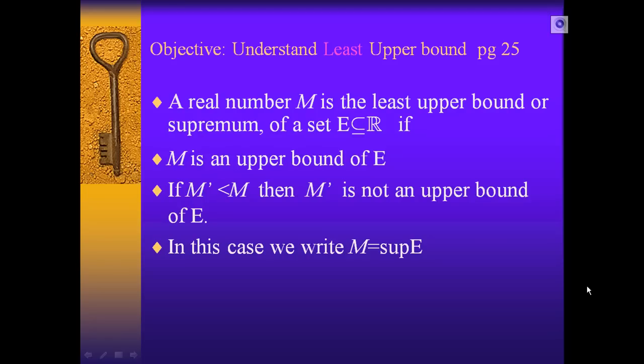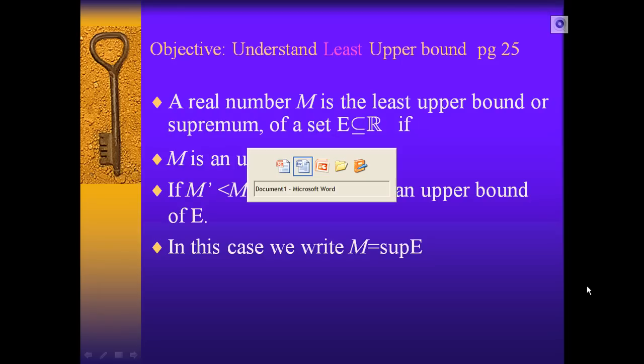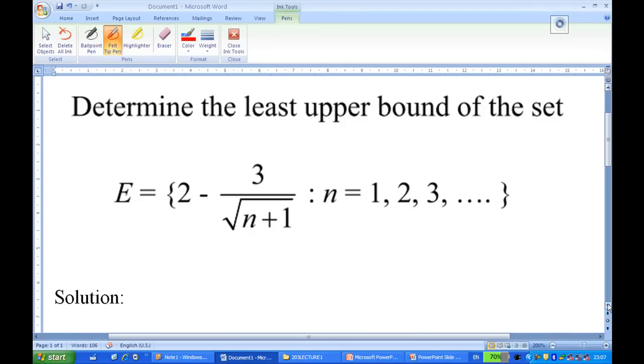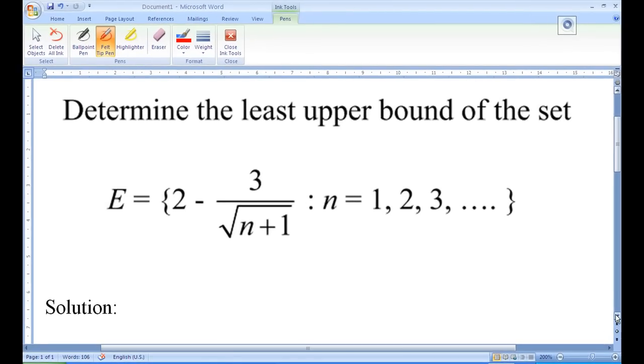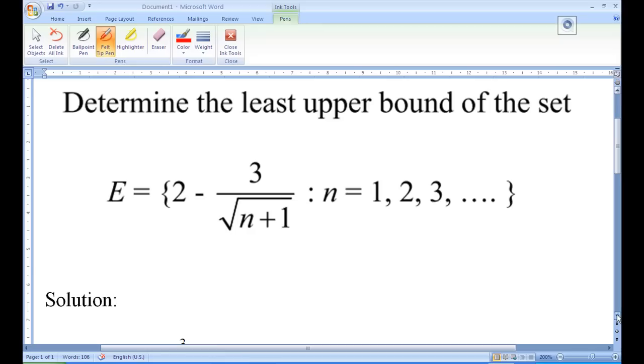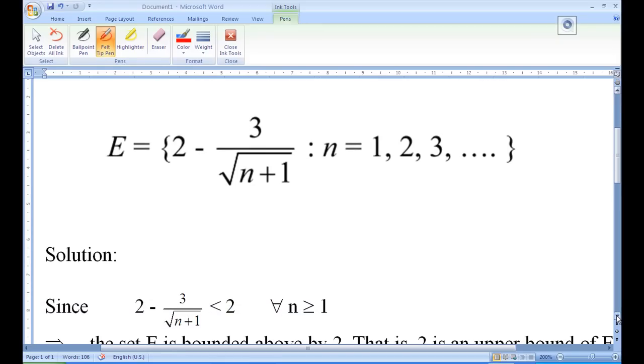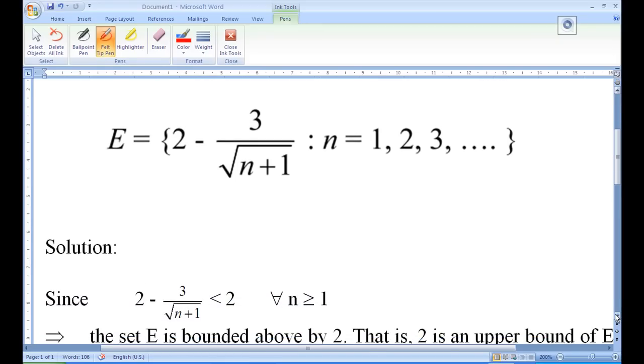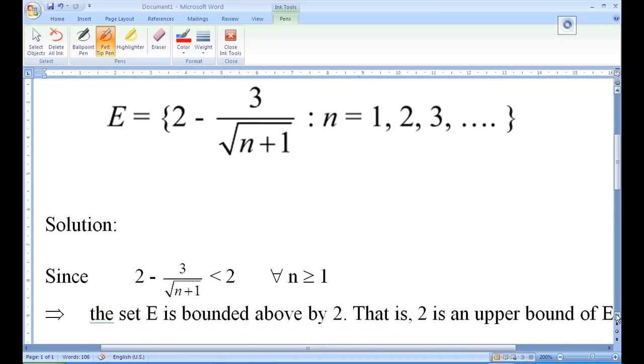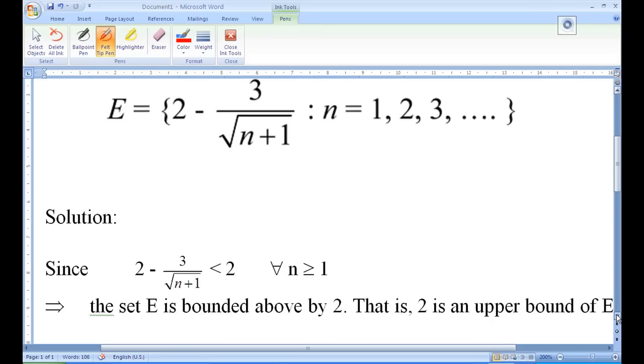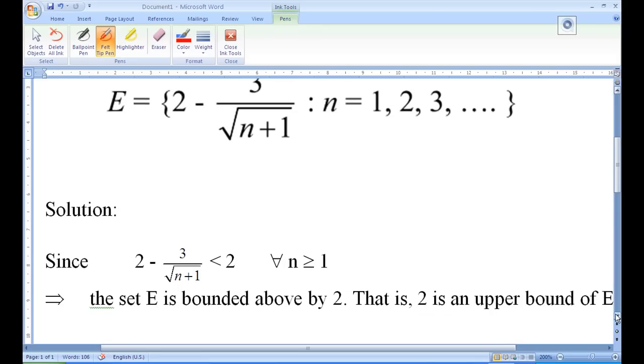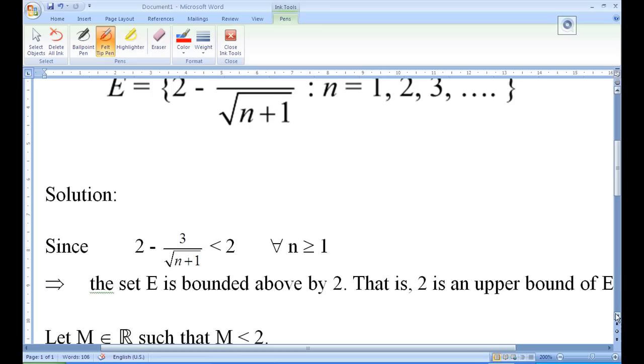So, the first thing is to establish that the set E has an upper bound. Now, obviously, everything in set E is less than 2, right? So, 2 is the upper bound of E. Since 2 minus 3 over square root of n plus 1 is less than 2 for every n greater than or equal to 1, E is bounded above by 2. So, 2 is the upper bound of E.